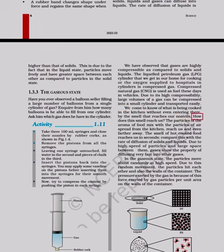Due to its high compressibility, large volumes of a gas can be compressed into a small cylinder and transported easily. We come to know of what is being cooked in the kitchen without even entering there by the smell that reaches our nostrils. How does this smell reach us? The particles of the aroma of food mix with the particles of air, spread from the kitchen, reach us and even farther away. Due to high speed of particles and large space between them, gases show the property of diffusing very fast into other gases.